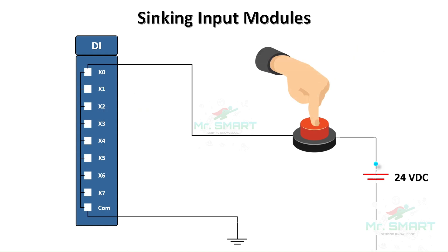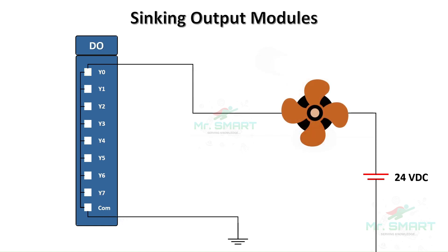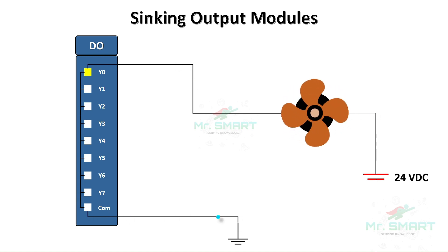In a sinking input module, the external device provides the source of current, and the input module sinks that current. The common terminal of the module is connected to the flow-back terminal, or simply grounded, to create current flow. A sinking output module works similarly — the output device, like a light or motor, acts as the source of current, and the output module connects the circuit to ground, completing it. The output module provides the ground path, hence it's called sinking.